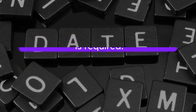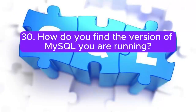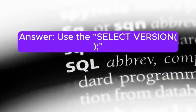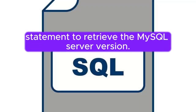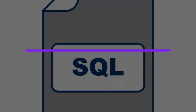Question 30: How do you find the version of MySQL you are running? Answer: Use the SELECT VERSION() statement to retrieve the MySQL server version.